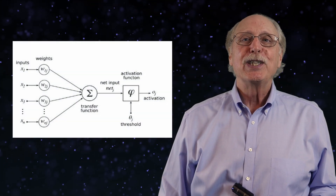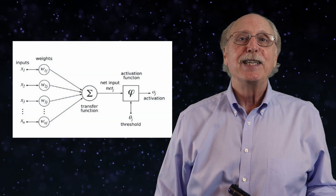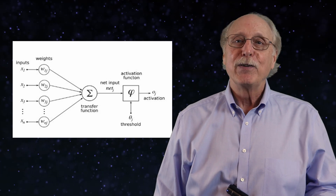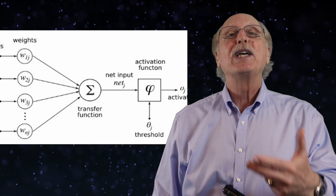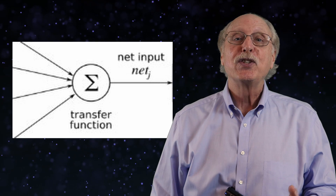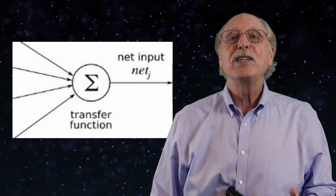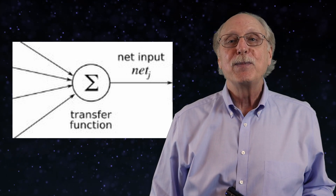Fundamental to all machine learning systems is the idea of the artificial neuron, the perceptron. Let's zoom in on the core function, which sums the weighted signals from the various inputs. Admittedly, there are a few cases where this process appears to work in a biological neuron, but for the majority of cases, it doesn't.